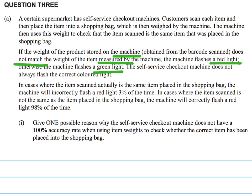Now, sometimes that self-checkout machine does not always flash the right coloured light — sometimes it makes mistakes. When the item is correctly scanned and placed in the bag, it will incorrectly flash a red light 3% of the time. When the item scanned is not the same as the item placed, it will correctly flash a red light 98% of the time.